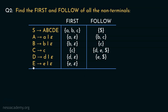Let's now determine the follow of E. The non-terminal E appears as the rightmost non-terminal in this entire production rule. So clearly, E will also be followed by the same symbol which follows S, that is the dollar symbol. These are all the firsts and all the follows of all the non-terminals in this particular grammar.